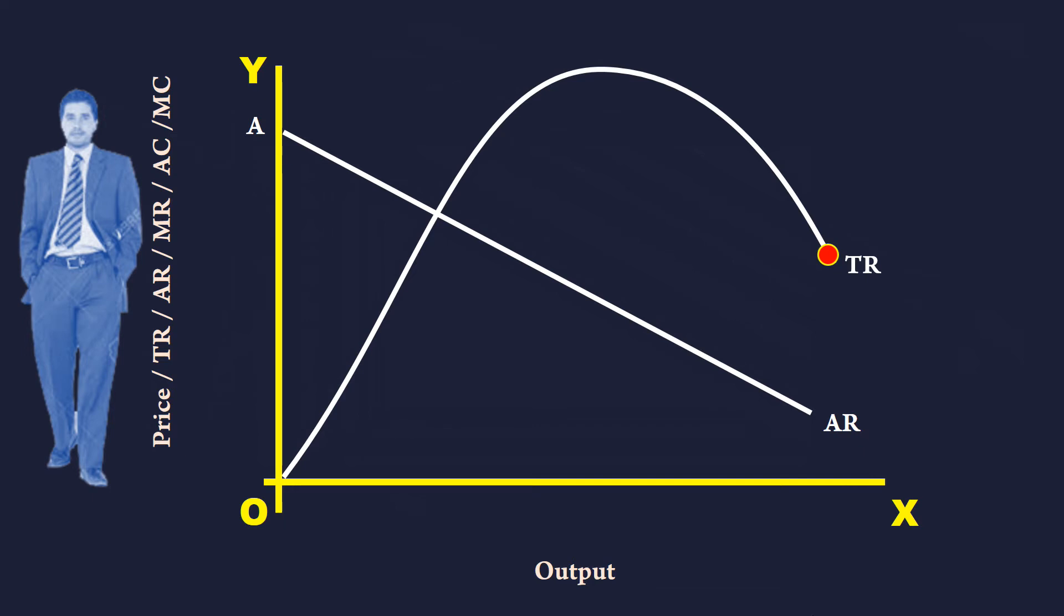As the AR curve descends, MR curve lies below the AR curve. MR curve cuts the x-axis at point M.